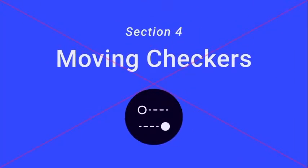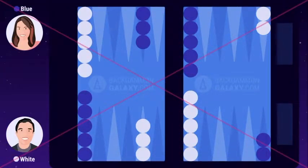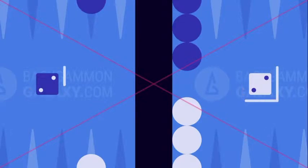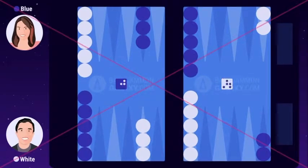Section 4: Moving Checkers. Both players start the game by rolling one die each. This is called the opening roll. Both players roll the number 2. If the same number is rolled in the opening, both players must make a reroll.